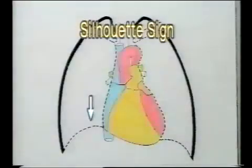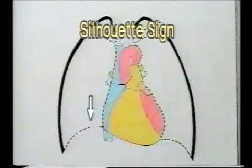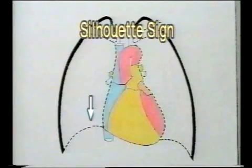The domes of the diaphragm are in contact with the lower lobe. So if a consolidation obliterates the diaphragm, it is in the lower lobe; otherwise it is in the middle or lingular lobe.